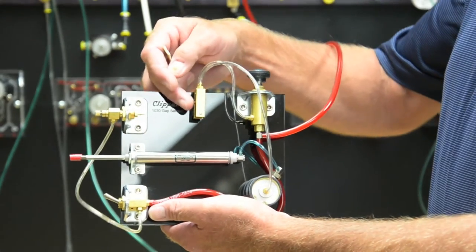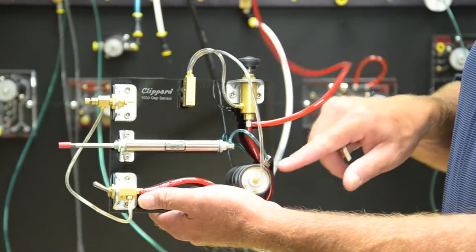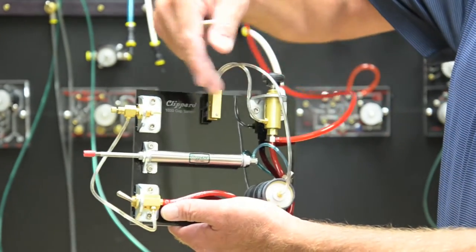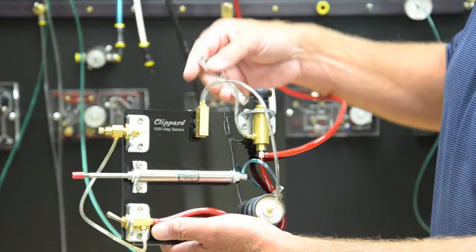The output of the gap sensor is coming over to the pilot portion of the low pressure control valve. This is giving us an on output at this moment, which is why you see the cylinder extended.